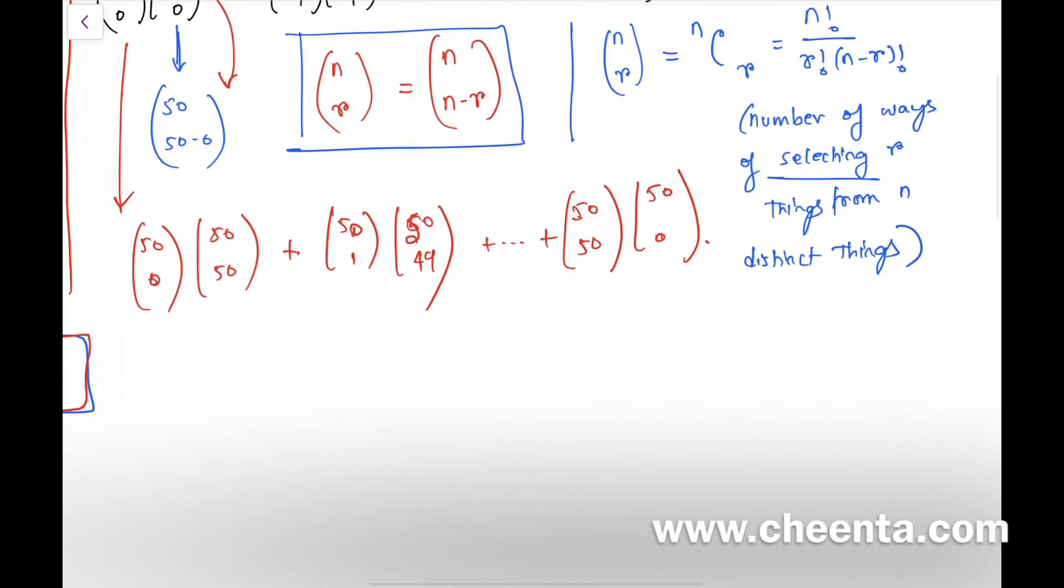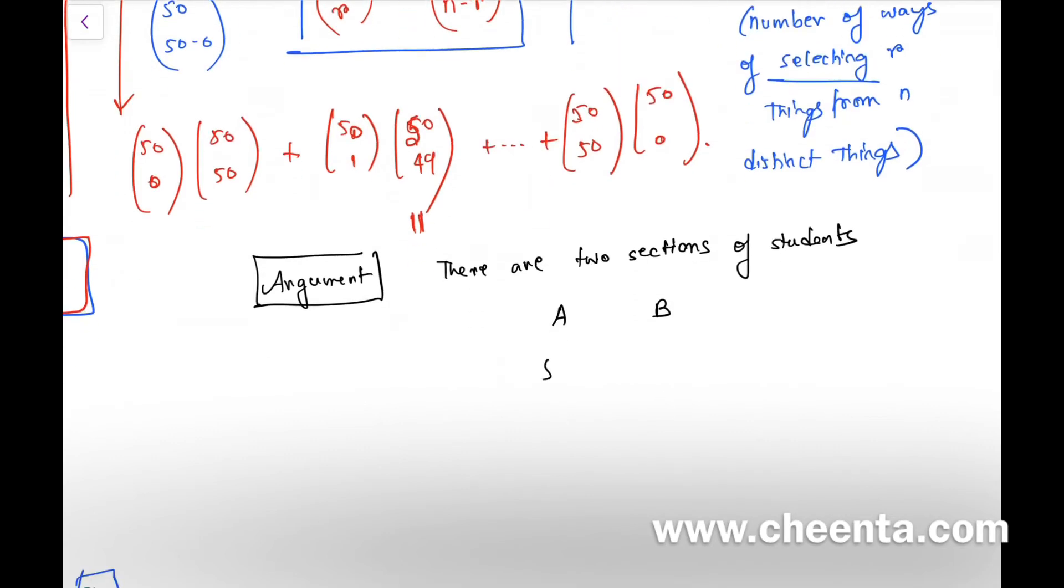Okay, now a very simple pattern is kind of evolving in front of us. Again, we can make an argument like this. Let's make an argument that there are two sections—suppose sections of students maybe—and each, suppose first one is A, second one is B, and each containing 50 students.